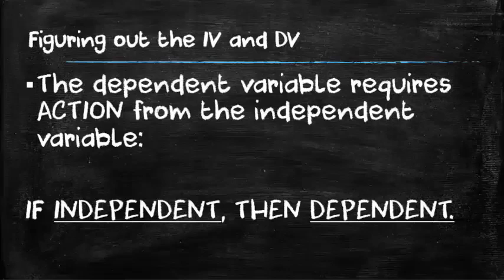Now remember this. A dependent variable requires action from the independent variable. And the way that I always remembered this when I first started trying to memorize the purpose of dependent and independent variables, I would always say to myself, the dependent variable depends on action from the independent variable. So if you translate that to your if-then statement, your independent variable is the if side of the equation and your dependent variable is the then side of the equation.